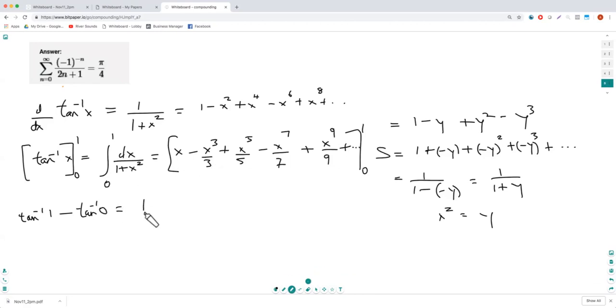So you've got tan inverse 1 minus tan inverse 0 equals 1 - 1/3 + 1/5 - 1/7 + 1/9 and so on, minus 0. This part goes to 0 because tan inverse of 0 is 0, and tan inverse of 1 is π/4, which is a 45 degree angle. So π/4 is therefore equal to 1 - 1/3 + 1/5 - 1/7 + 1/9, etc. And that's all you need.